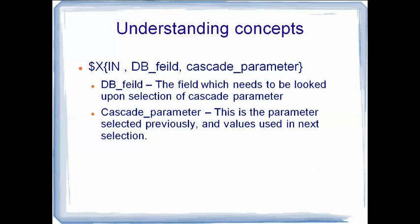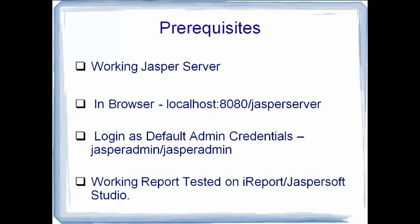This seems a bit complex but the basic concept is that we need to find an equal of the parameter entered by the user and put it into the SQL query, so that the where clause gets modified and we get a filtered parameter select in the next parameter based on the previous parameter. For prerequisites, you need a working Jasper Server installation — I will use the 5.0.0 community edition — and you need to go to localhost 8080 slash jasper server.